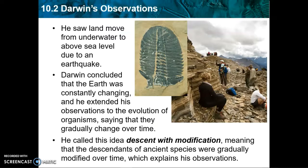Darwin took all of his observations and concluded that the Earth was definitely changing over time. There had been some pretty massive changes present in the fossil record and in geologic formations, and so he thought it must be happening in living species as well. His conclusion — the idea he came up with — he called descent with modification. That simply means that descendants from an ancestor were slightly different, with gradual changes over time making the descendants modified from what the ancestor looked like.